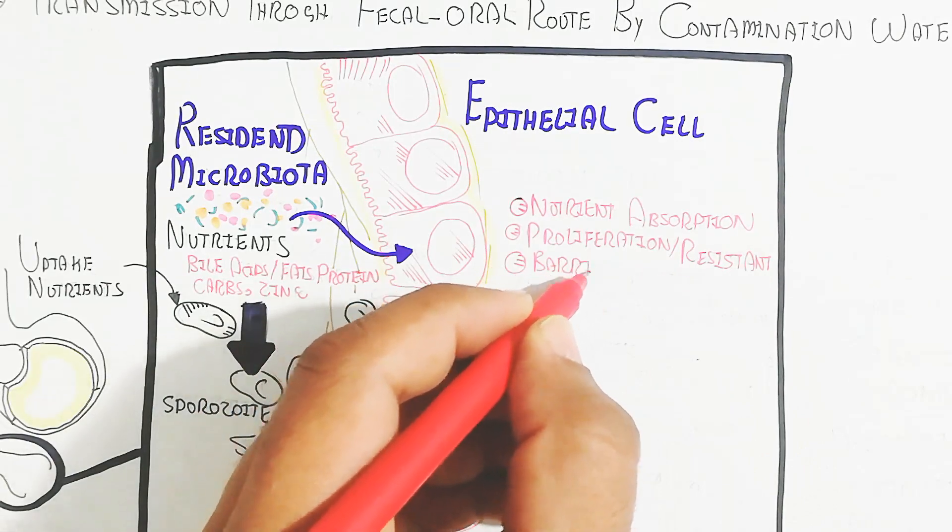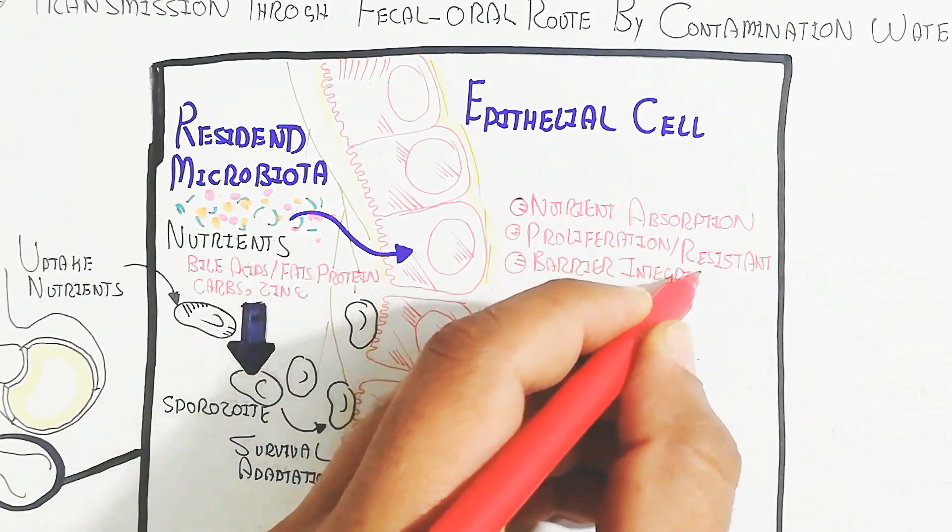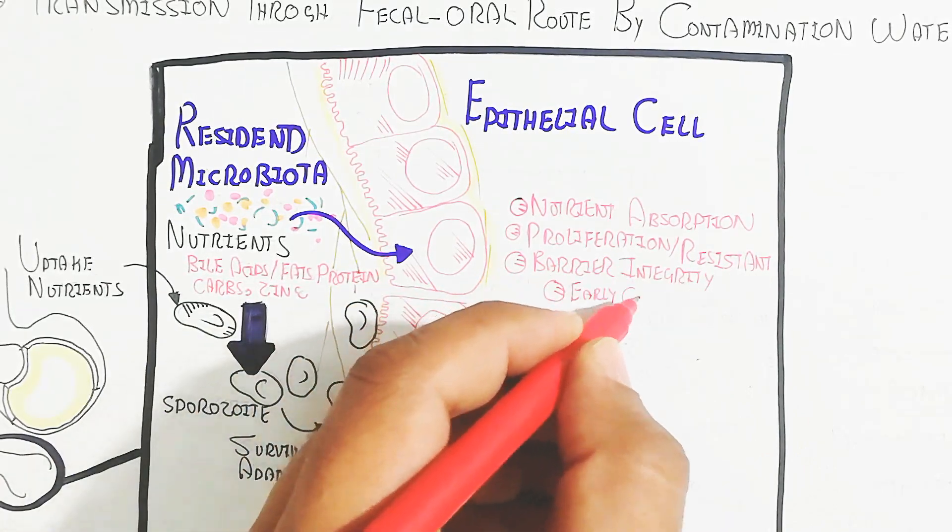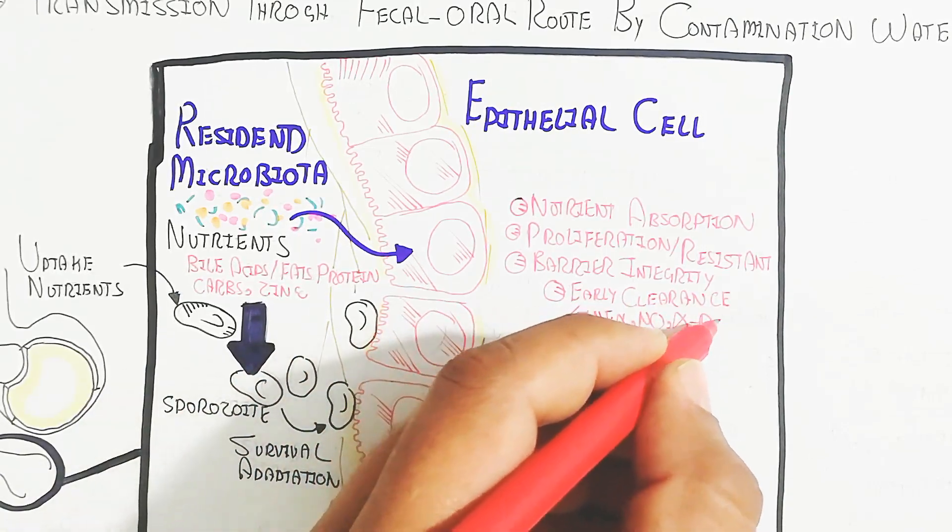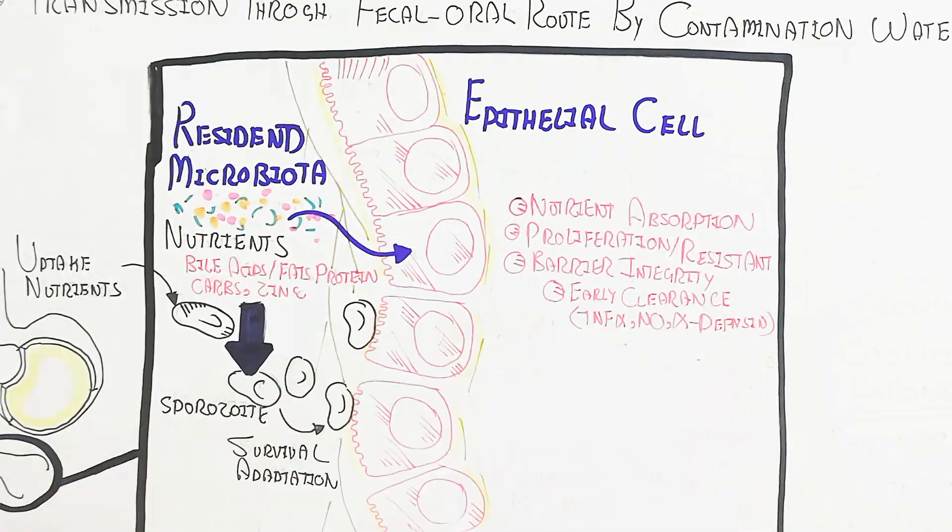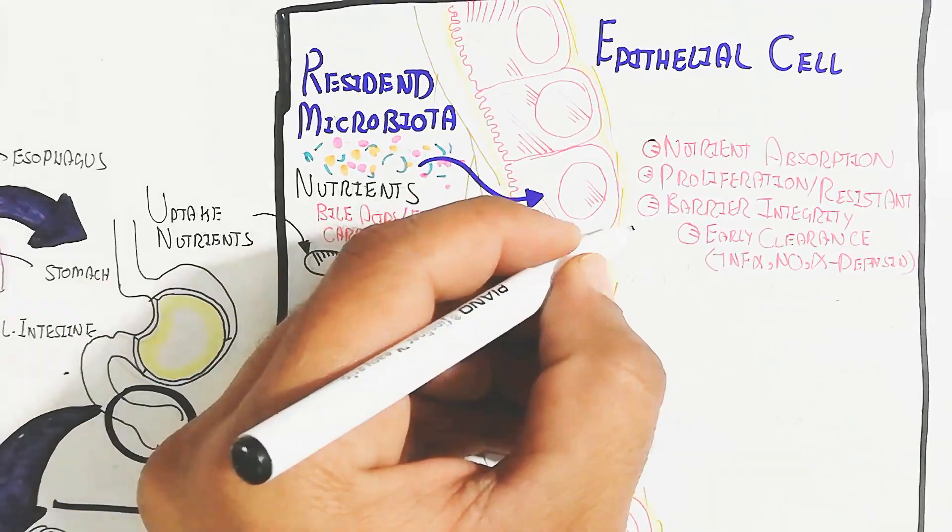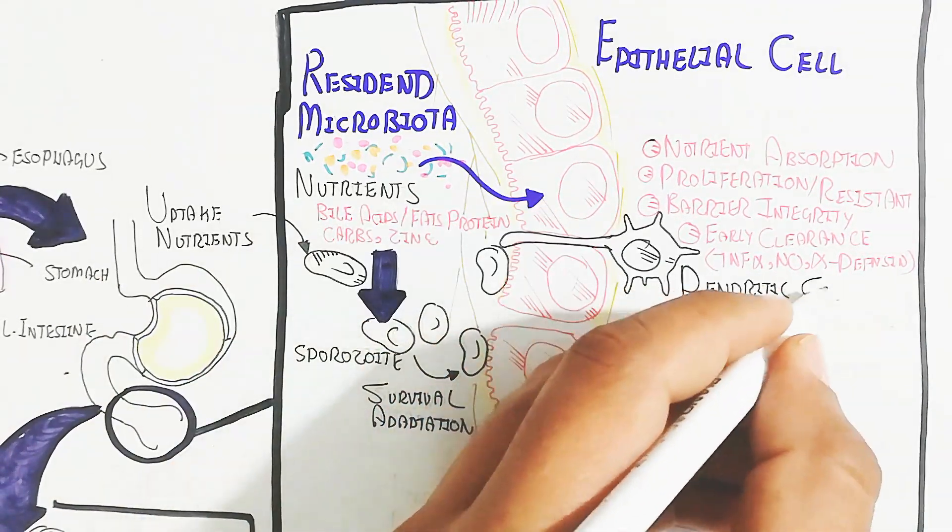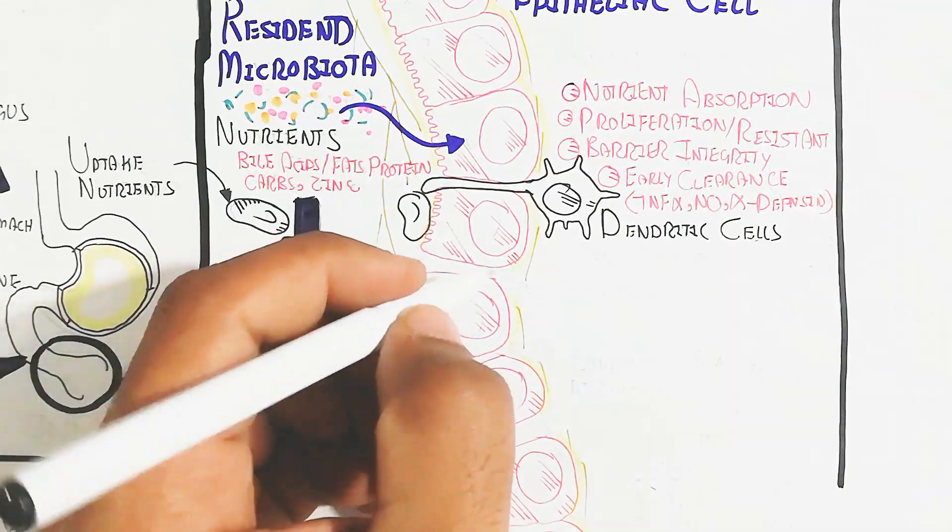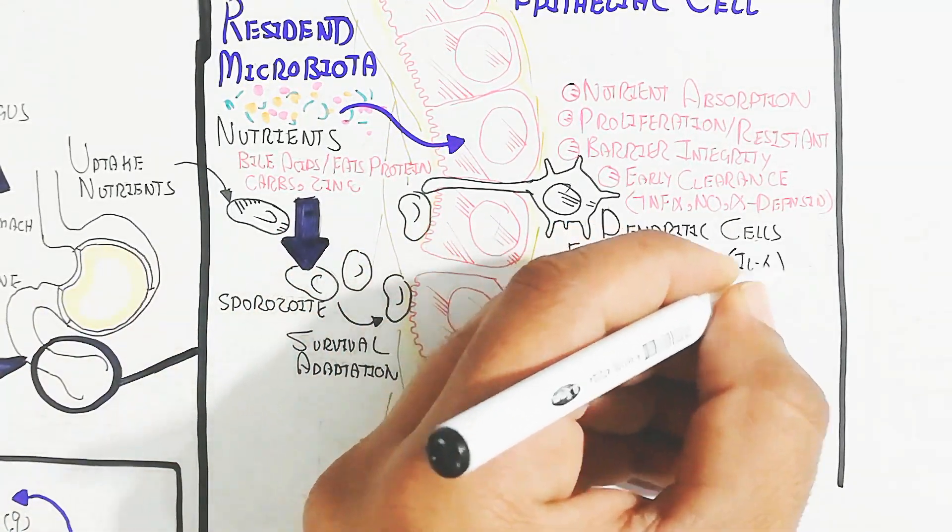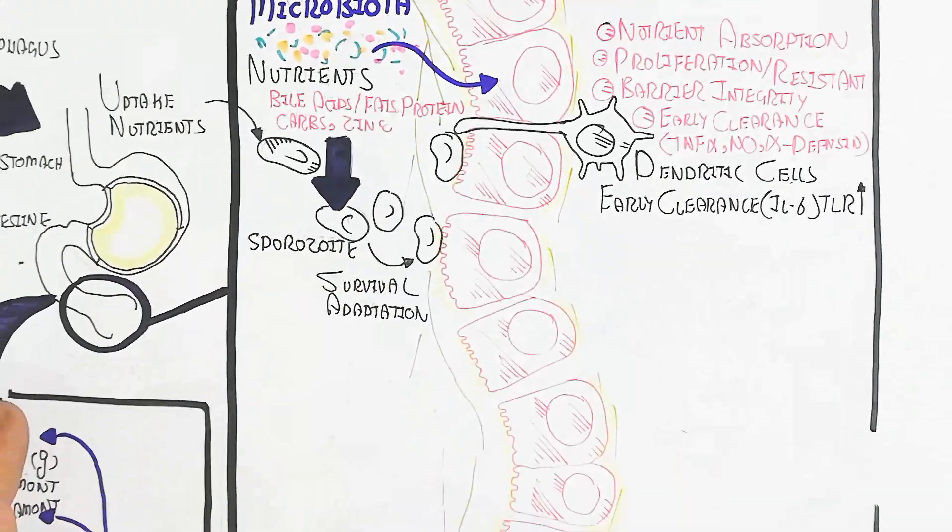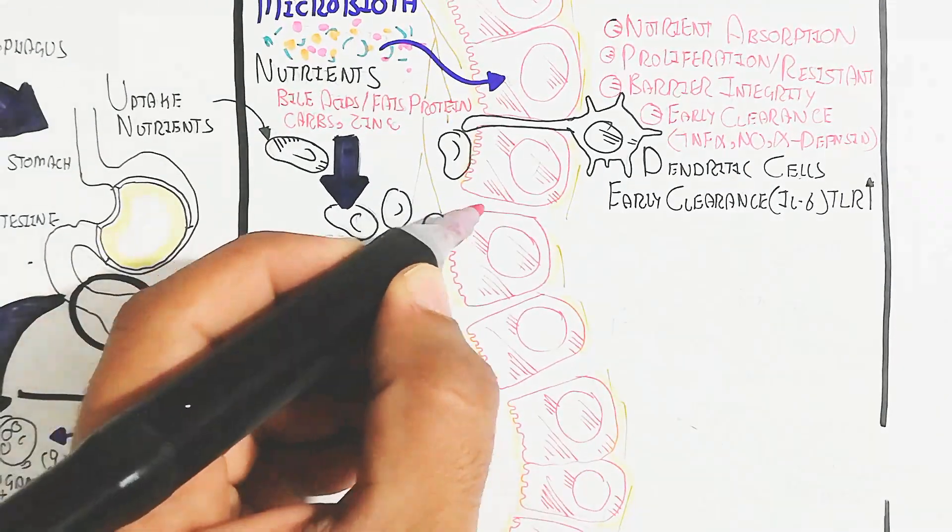Early clearance can occur due to the dendritic cell. Dendritic cells interact to identify the antigen of the sporozoite. These are gastrointestinal dendritic cells present in the epithelium. Early clearance occurs due to interleukin-6 and toll-like receptor enhancement.